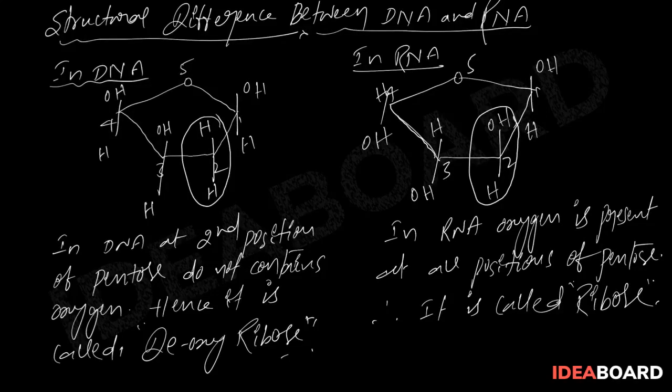One important point: saying 'in DNA oxygen is absent' as a general statement is incorrect in this context. The correct statement is: in DNA, at the 2nd position of the ribose, oxygen is absent. And in RNA, at all positions of the ribose molecule, oxygen is present. This is the main difference between DNA and RNA with respect to the ribose molecule.